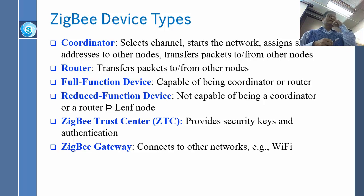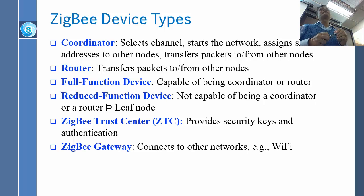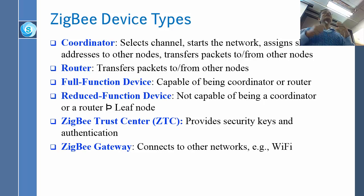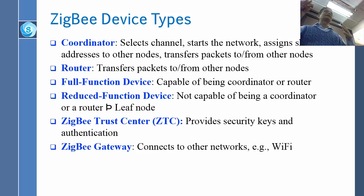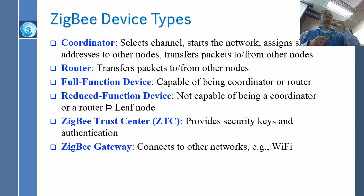You mentioned the trust center being only one — is that one per cluster? Let me correct myself. When I say trust center is only one, the trust center needs lots of security. You could keep more than one, but you have to keep them synchronized. They act as one. Physical copies, you could have many.